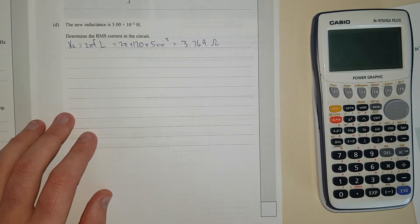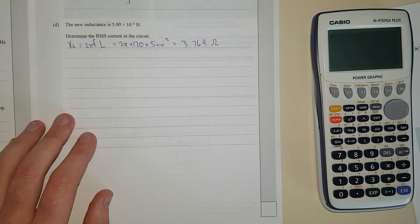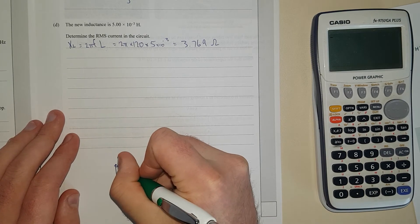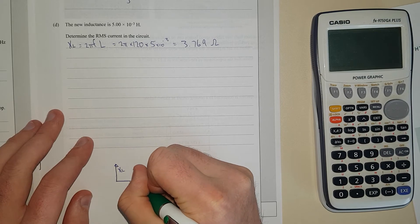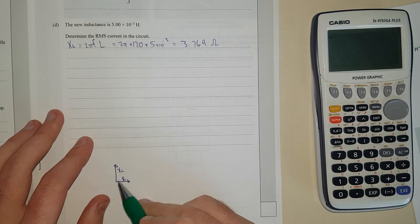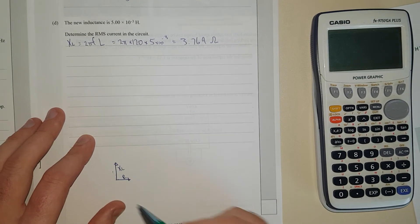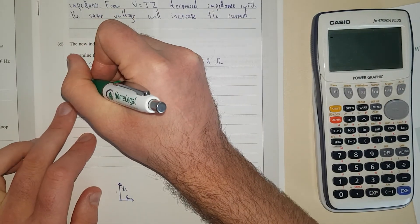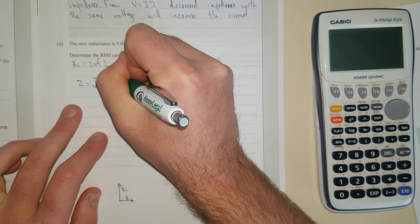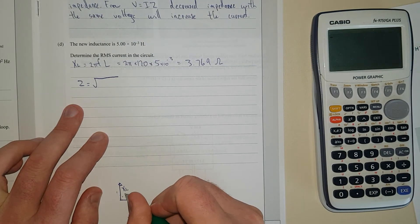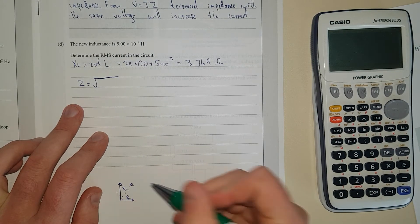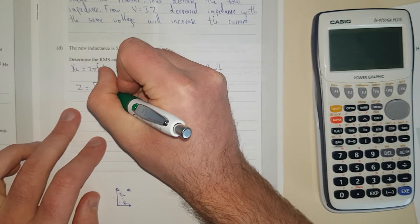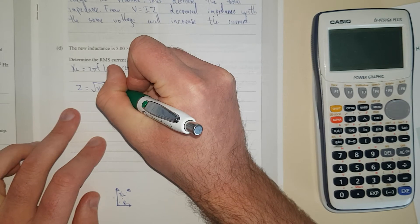If you draw a phasor diagram, inductors lead resistance. Here's a phasor diagram: here's XL, there's resistance. Inductors lead the resistance by 90 degrees. In other words, they're 90 degrees out of phase. Total impedance, symbol Z, equals square root, because it's just Pythagoras. We're going to add these two vectors together, so it's XL squared plus R squared.